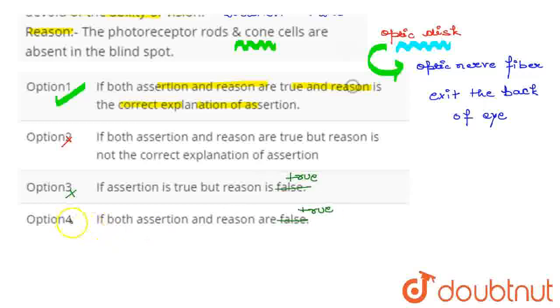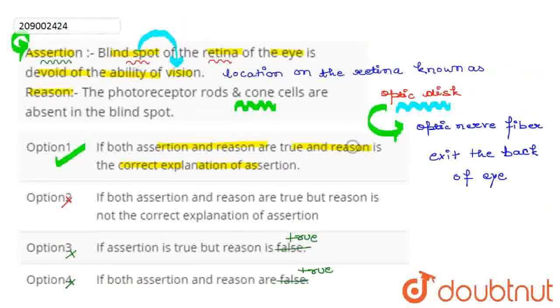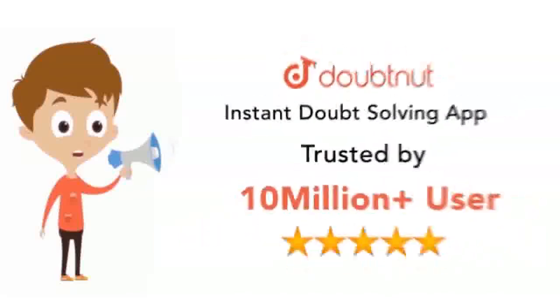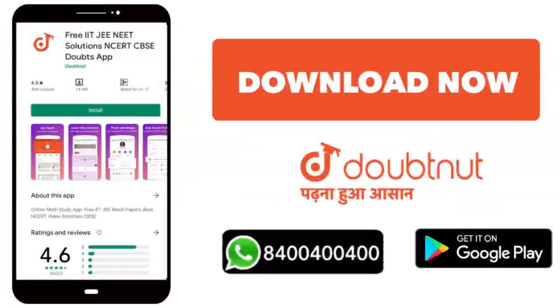At last, both assertion and reason are false. Again, the option is wrong. So, the correct answer remains option first here and the others are wrong options given for this question.